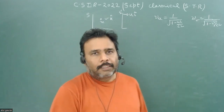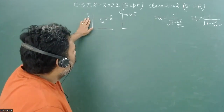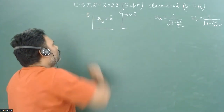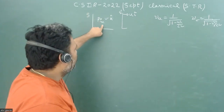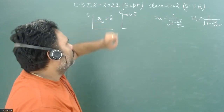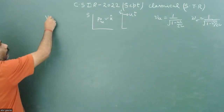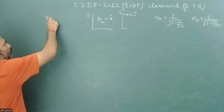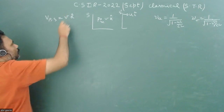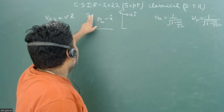First I will discuss the actual problem. There is an S frame which is an inertial frame, and the particle — I can write P for the particle — has a rest mass m, moving with speed v in the k-cap direction. So the velocity of the particle with respect to S is v in the k-cap direction.